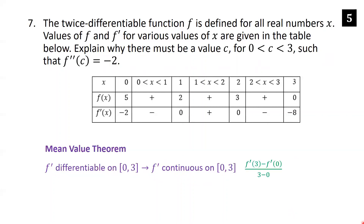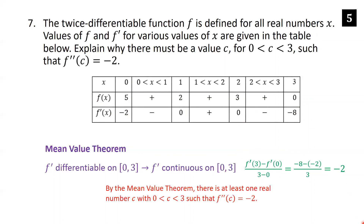We compute f prime of 3 minus f prime of 0 over 3 minus 0. Using the f prime row of the table: f prime of 3 is negative 8, f prime of 0 is negative 2, so negative 8 minus negative 2 is negative 6, divided by 3 is negative 2. By the Mean Value Theorem, there is at least one real number c with c between 0 and 3 such that f double prime of c equals negative 2, since we applied the theorem to f prime.